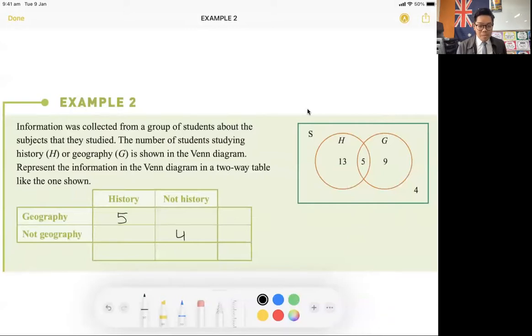Now, how many people study history but not geography? The people that study history but not geography, that's going to be that number there, because they study history but they don't also study geography. So that means history but not geography, that would be 13, and that's going to go in this box here. And then for the other one, they study geography but not history. I can see that there's nine people that study geography but they don't study history. So that means nine is the number that goes in here.